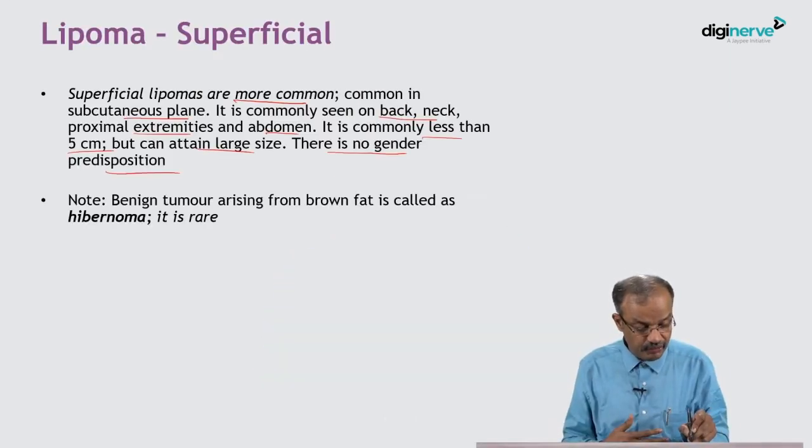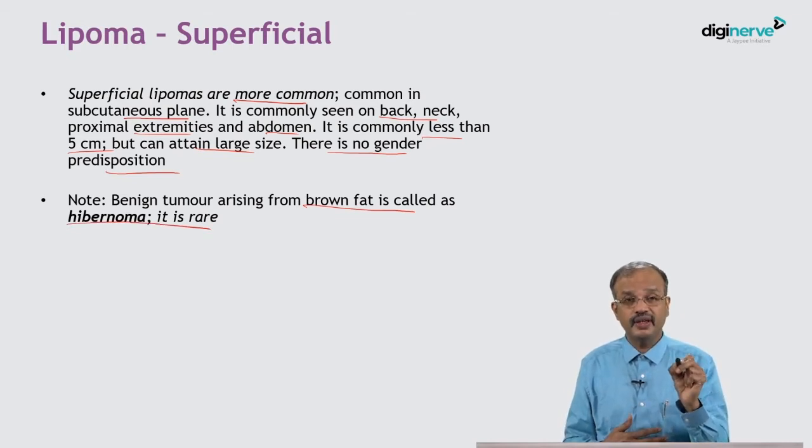A benign tumor arising from brown fat is called a hibernoma; it is very rare. Brown fat is not commonly present in adults — after birth, brown fat is replaced by yellow fat, but sometimes remnants may persist in certain places. If those remnants undergo neoplasia, it is called a hibernoma, which has a very dark brown color unlike the yellow fat of a lipoma.